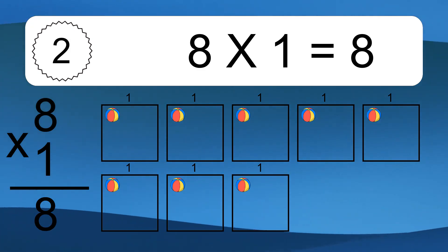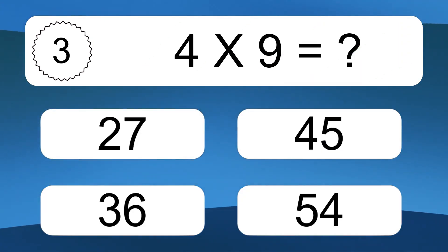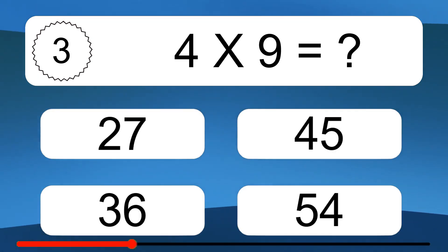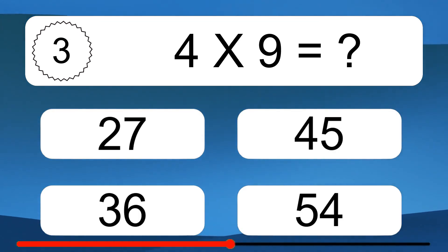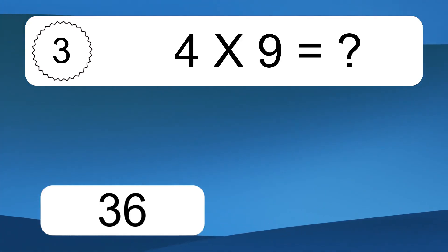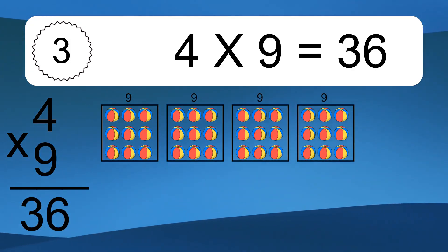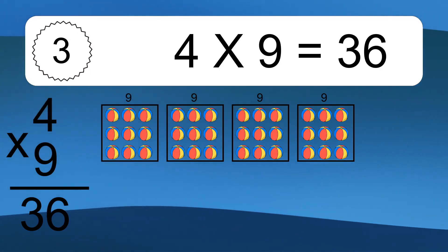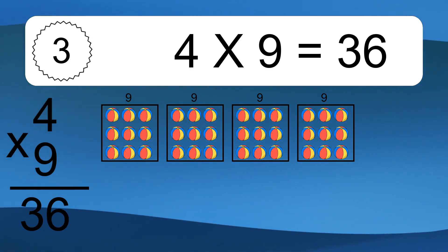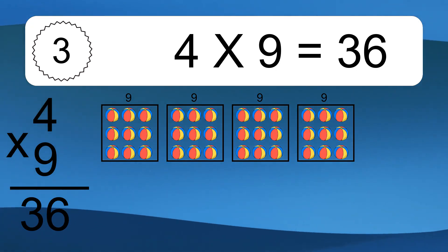This equals 8 balls. 4 times 9 equals what? We have 4 boxes, and each box has 9 colorful balls inside. If you count all the balls in all the boxes together, you will have 4 times 9 balls. This equals 36 balls.